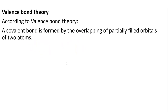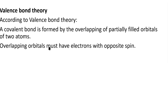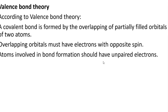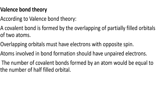Valence bond theory: according to valence bond theory, a covalent bond is formed by the overlapping of partially filled orbitals of two atoms. The overlapping orbitals must have electrons with opposite spins. Atoms involved in bond formation should have unpaired electrons. The number of covalent bonds formed by an atom is equal to the number of half-filled orbitals.